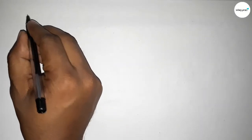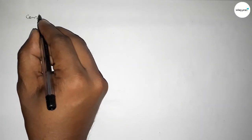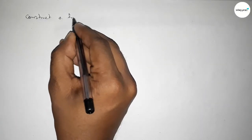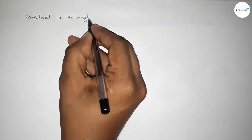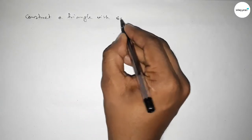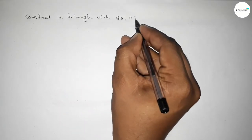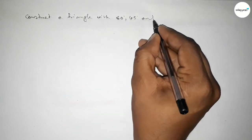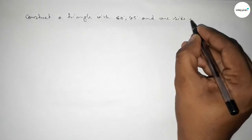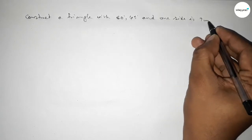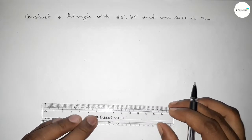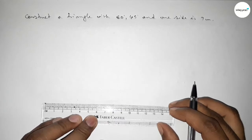Hi everyone, welcome to SI Share Classes. Today in this video we have to construct a triangle with two given angles: 60 degrees and 45 degrees, and one side of 9 centimeters. So let's start the video.